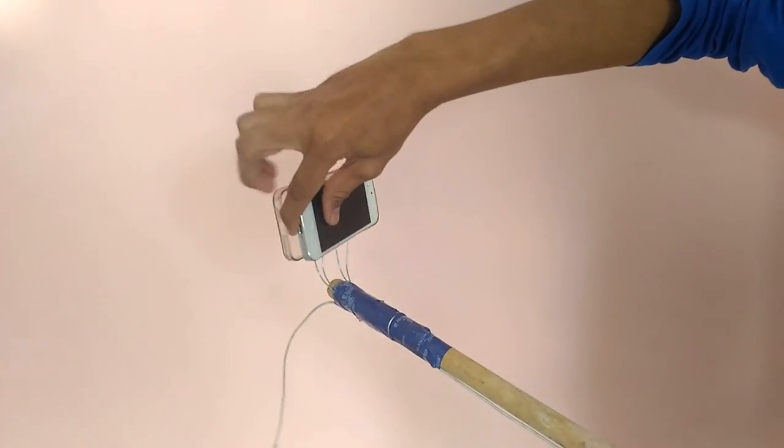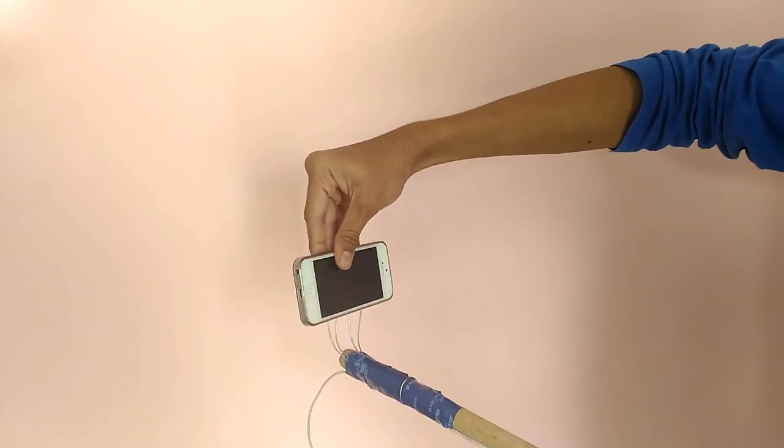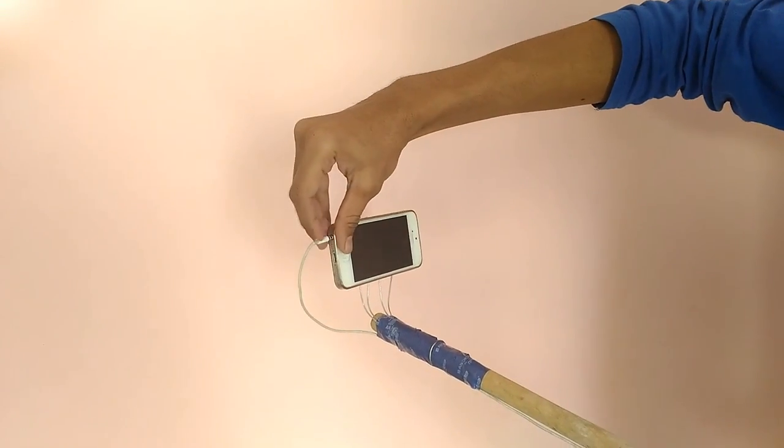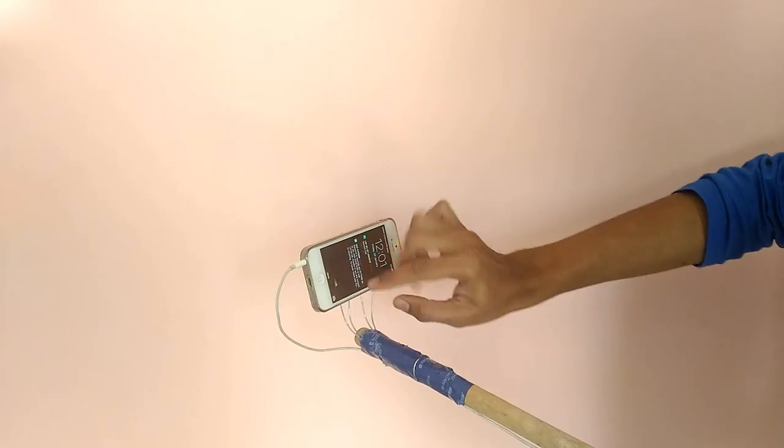Now fix the mobile in the mobile cover, plug in the audio pin, and open the camera.